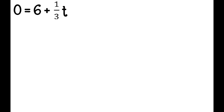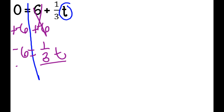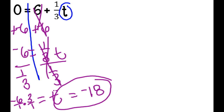I draw my line and circle my variable. This throws people when there's a 0 on one side, but we treat it the same as any other number. To get rid of the 6, I add a negative 6 to both sides — 0 plus negative 6 is negative 6 — leaving (1/3)t = -6. I divide both sides by 1/3, keeping flip changing: negative 6 over 1 times 3 over 1. Negative 6 times 3 is negative 18, so t equals negative 18.